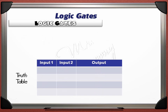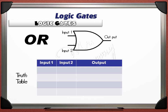The second logic gate is the OR gate. The OR gate gives an ON output if input 1 OR input 2 is ON. If both inputs are OFF, the output is OFF. If input 1 is OFF and input 2 is ON, the output is ON. If input 1 is ON and input 2 is OFF, the output is also ON. If both inputs are ON, the output is ON.